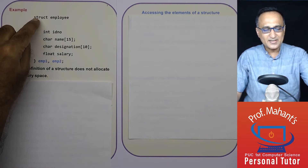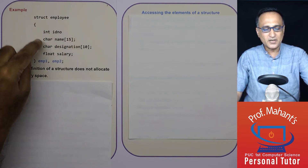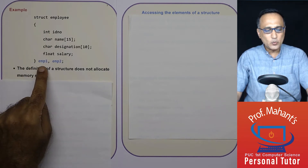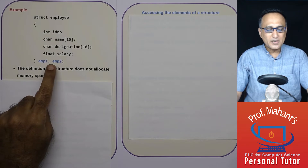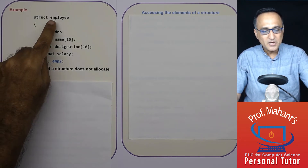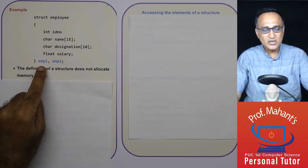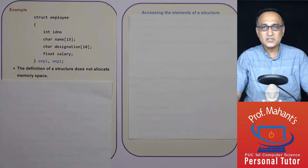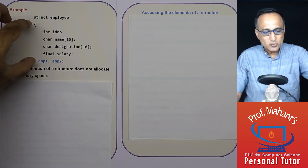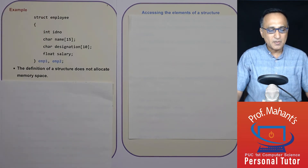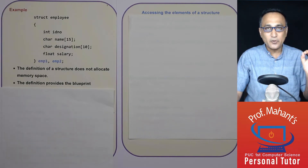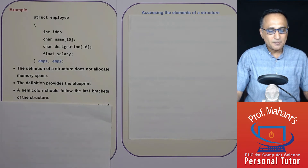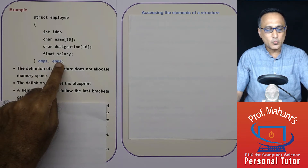Here I have declared struct employee with the information I have been using again and again. In the definition of this struct employee, I have already declared two variables EMP1 and EMP2. EMP1 and EMP2 will have memory allocated to them as variables of this particular structure type. The struct employee definition itself does not allocate any memory space — it merely provides the blueprint or model, just as an architect provides a blueprint for a house. The semicolon must follow after the last declaration of these two variables.